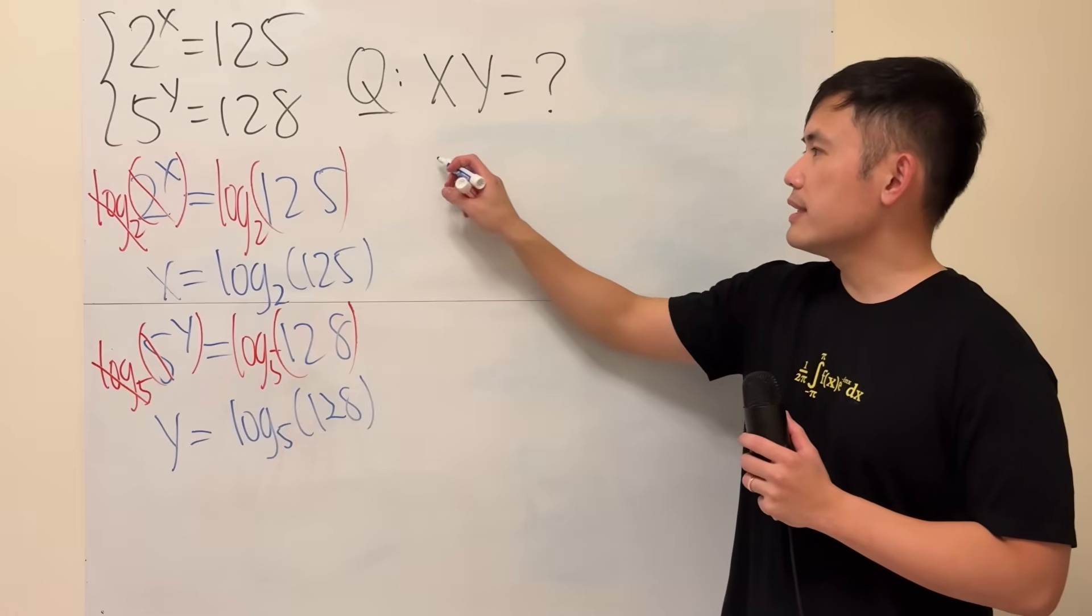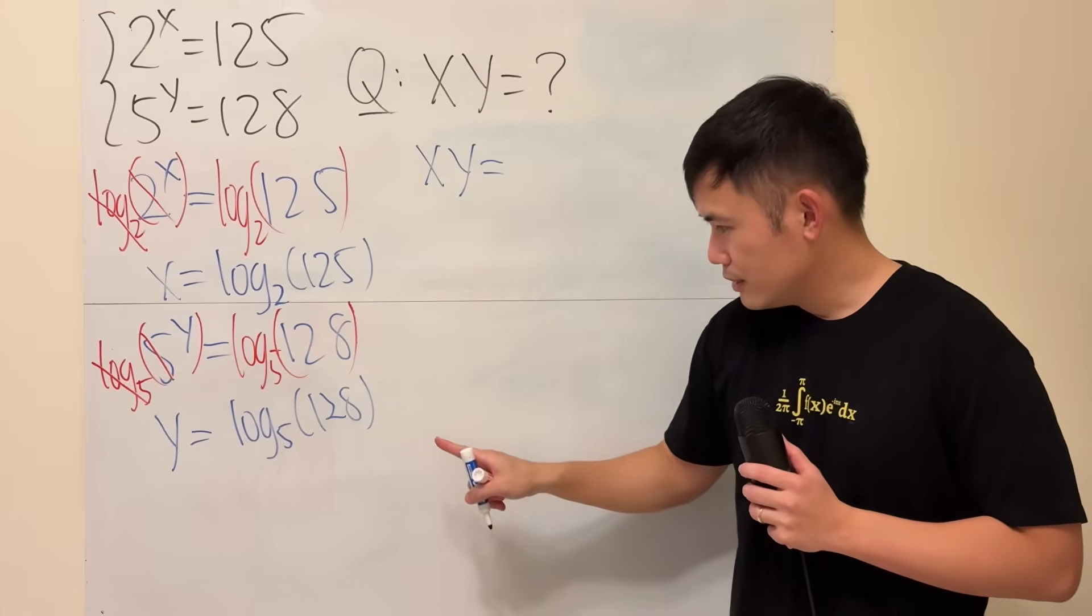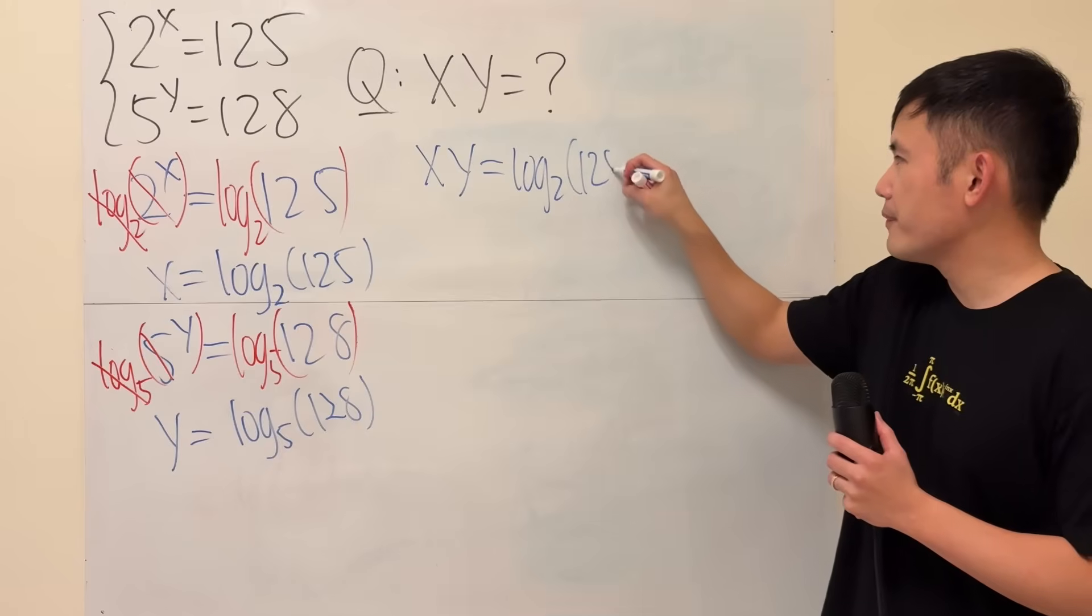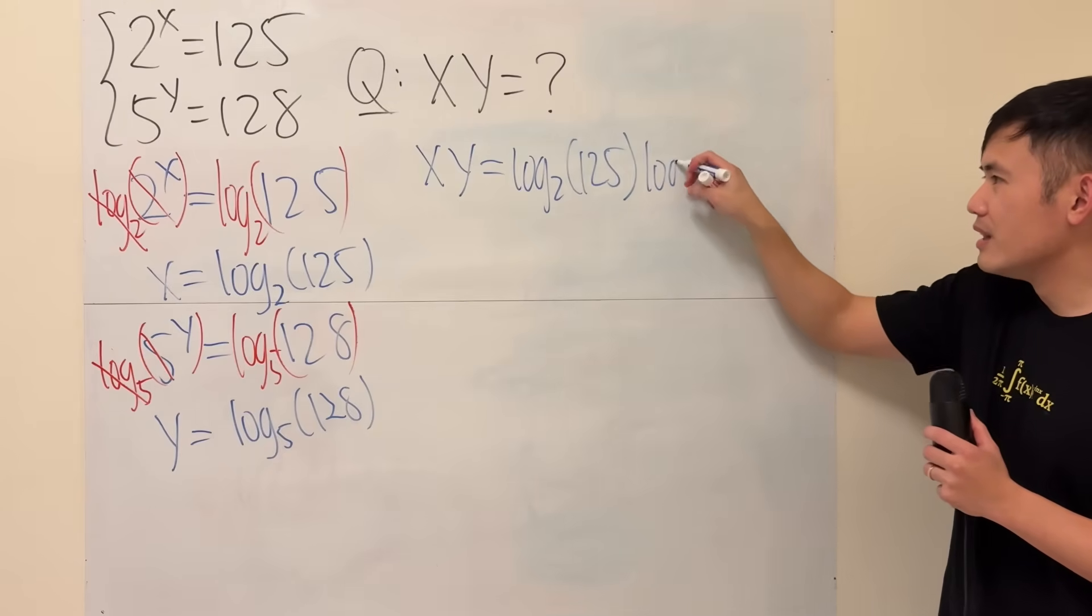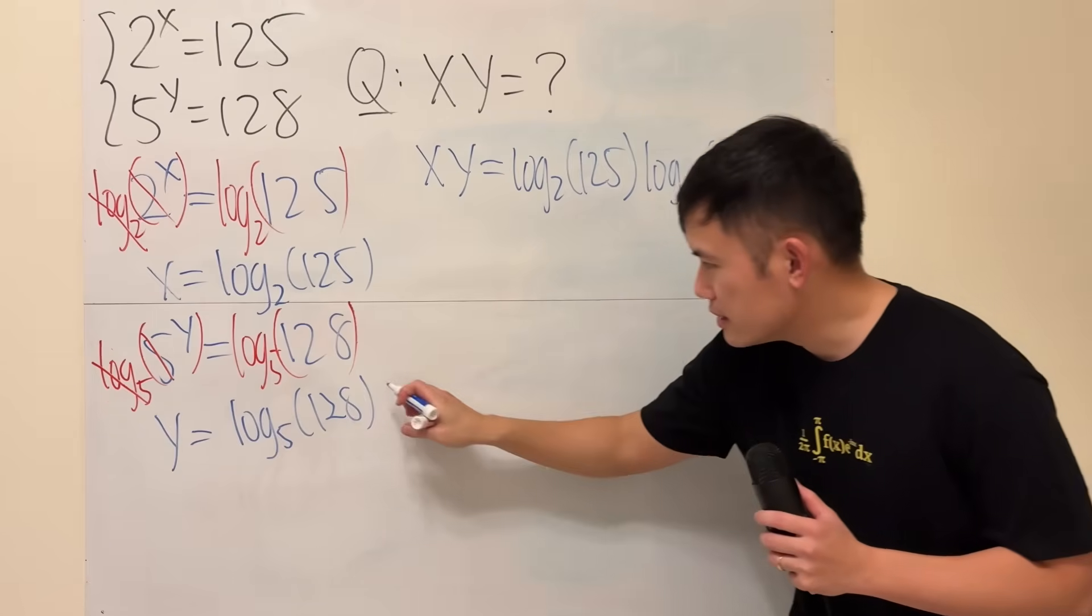Now, to figure out x times y, all we have to do is this times that. So we have log base 2 of 125 times log base 5 of 128. This is an 8, not delta.